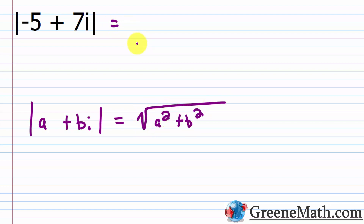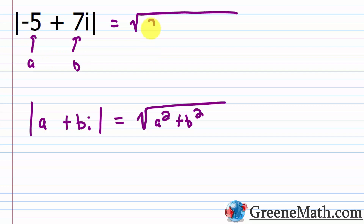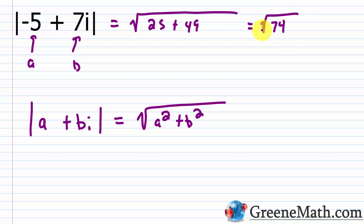Let's go through a few quick examples. Using the formula: the absolute value of a plus bi equals the square root of a squared plus b squared. For the absolute value of negative 5 plus 7i: a is negative 5, negative 5 squared is 25; b is 7, 7 squared is 49. 25 plus 49 is 74. So this equals the square root of 74. Since 74 is 37 times 2 and 37 is prime, we can't simplify further — the answer is the square root of 74.